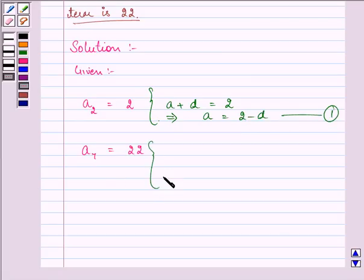Similarly, for this we can write that A plus 6D is given to us as 22. This implies that the value of A is 22 minus 6D. Let this be the second equation.